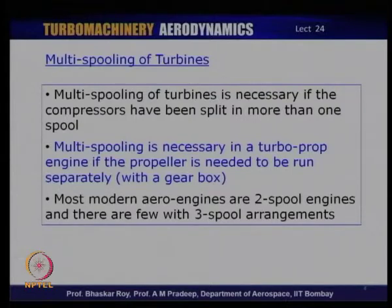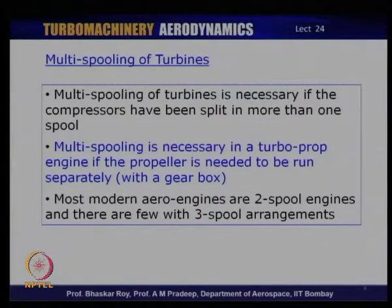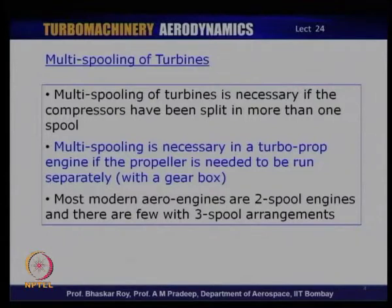Those decisions are made in a much larger context, bringing in the design and features of the compressor or, if power is going out to an external generator, those requirements as well. In a turboprop engine — a gas turbine plus propeller — multi-spooling is often resorted to so that the propeller has a turbine or set of turbines to supply power through normally a gearbox. The shaft hooked to the gearbox has its speed controlled to supply lower RPM to the propeller.